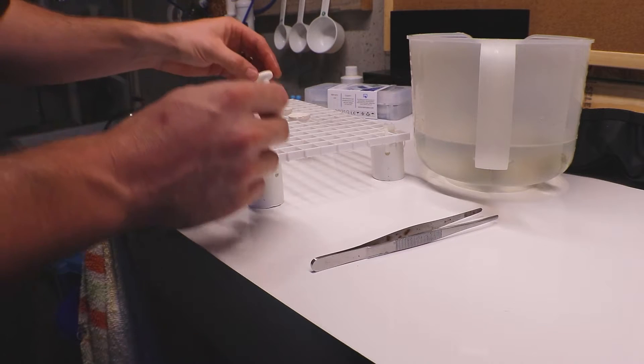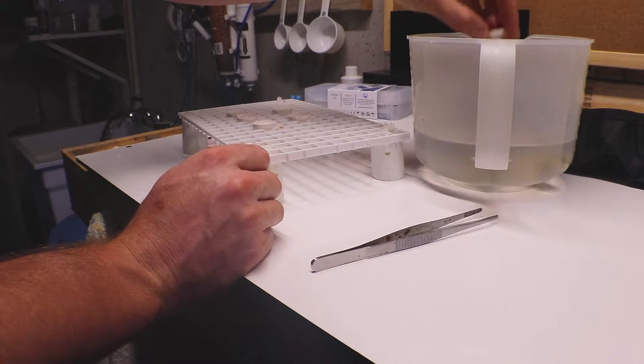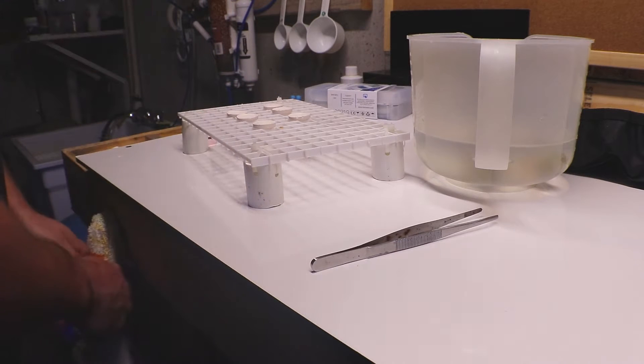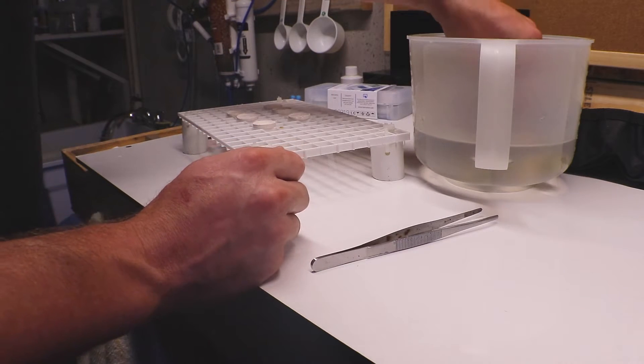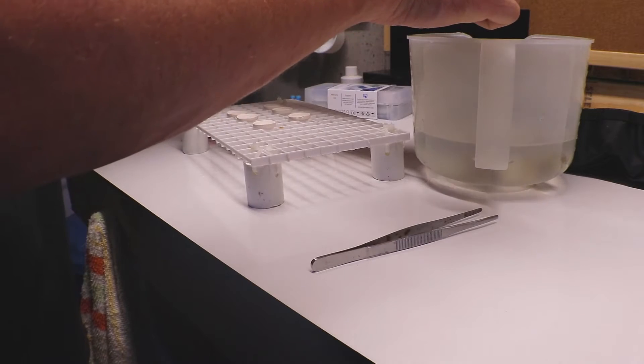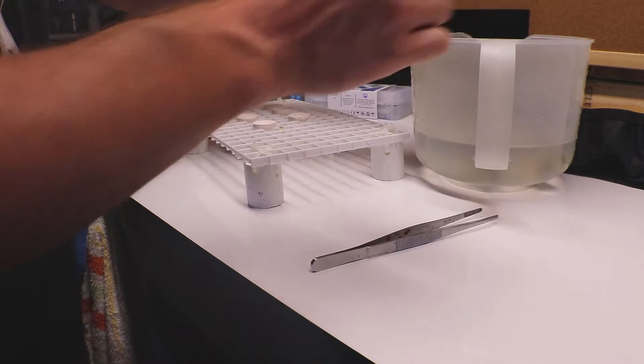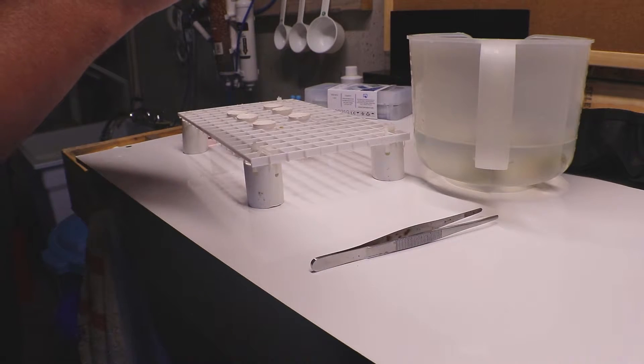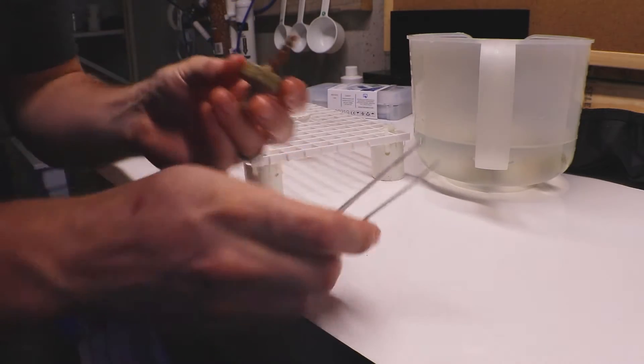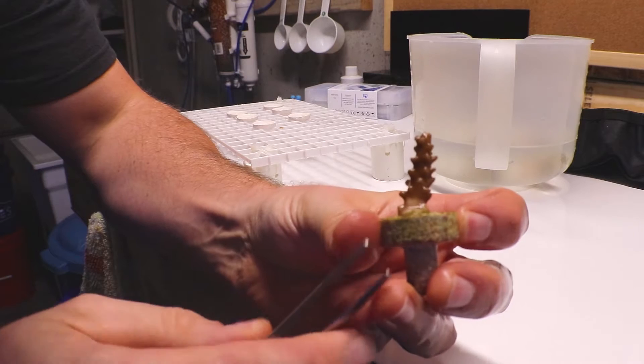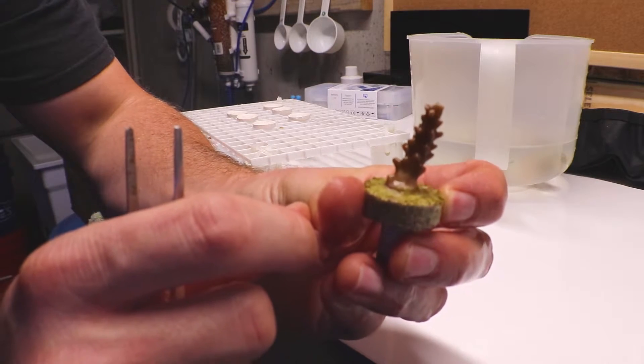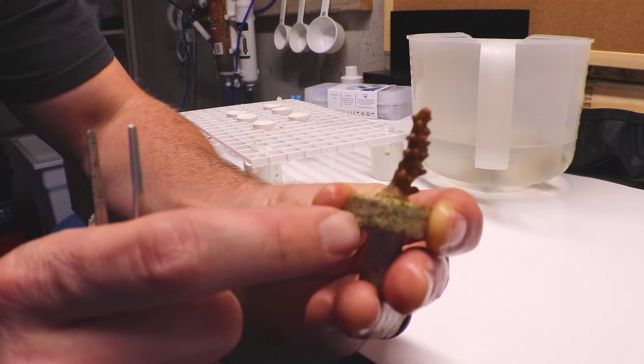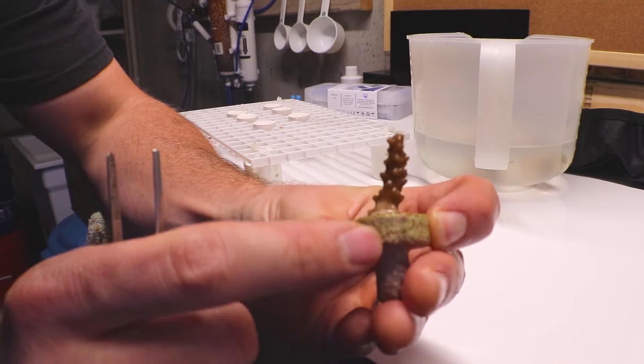SPS corals, acros, certain ones can be pretty picky. They like certain water quality, certain light, they don't like fluctuation, especially in dKH. If you keep it at 9, 10, 8, whatever, they like it to be stable. As long as it doesn't fluctuate too much, if you're above 8 you're probably good.